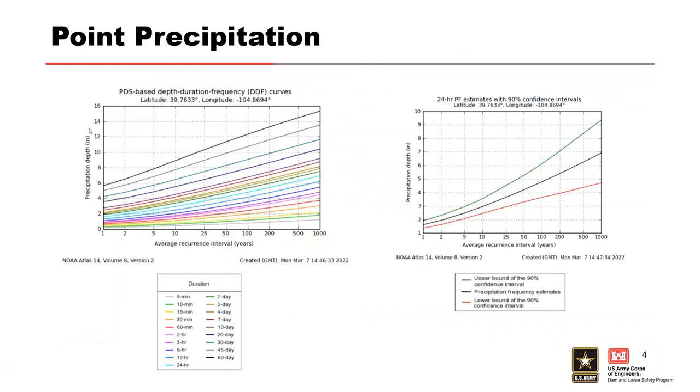NOAA Atlas 14, of course, is point frequency estimates for various frequencies and durations. So, the plot on the left shows frequency curves for a bunch of different durations. And the plot on the right shows the frequency for the 24-hour duration with its uncertainty bounds. So, all of them have uncertainty around them. The information is available in tabular or graphical form, and you can download it in GIS digital grids.